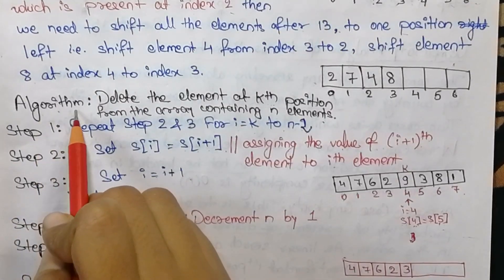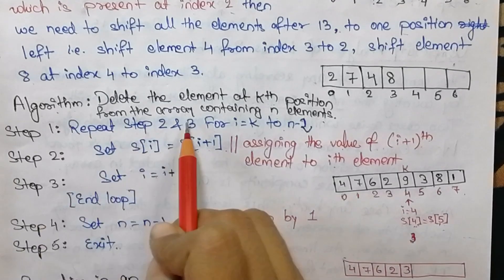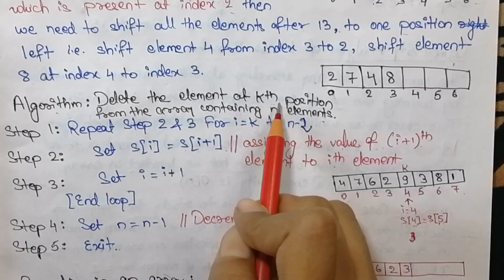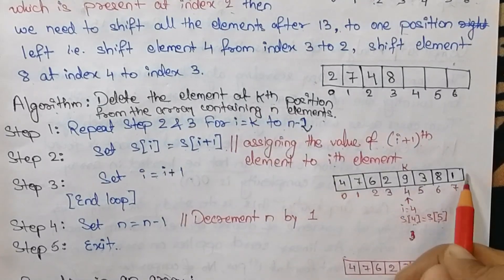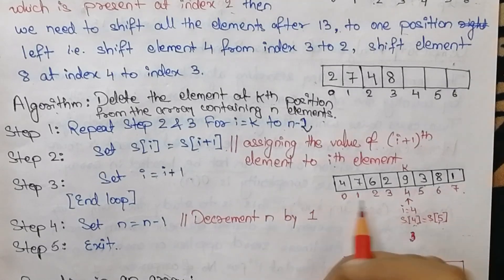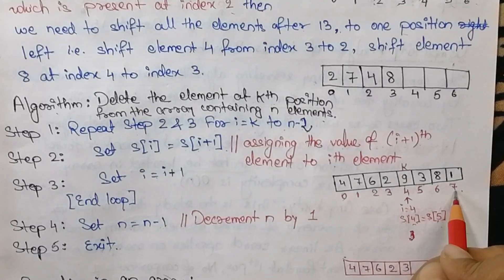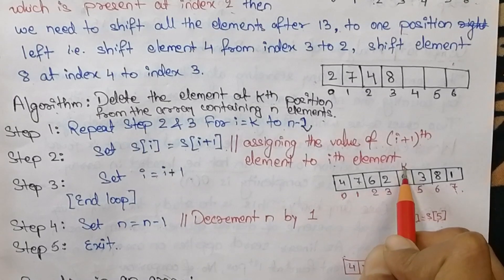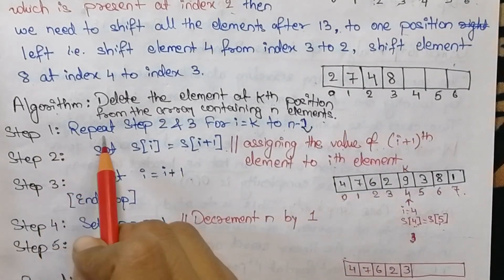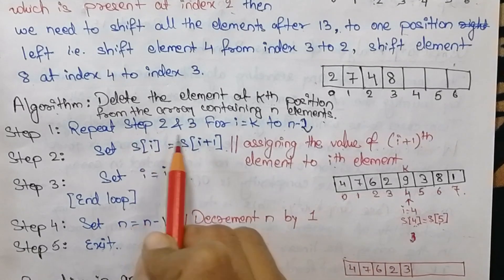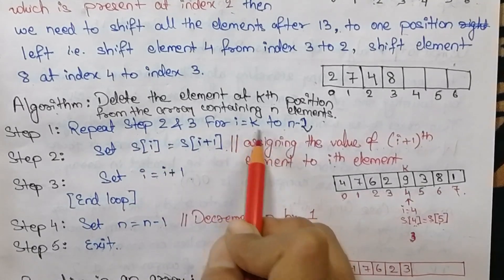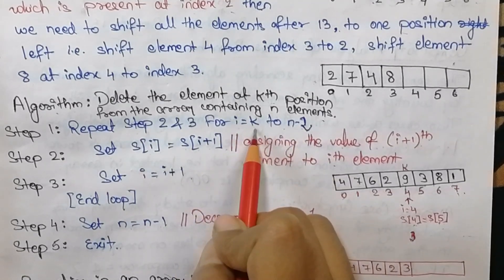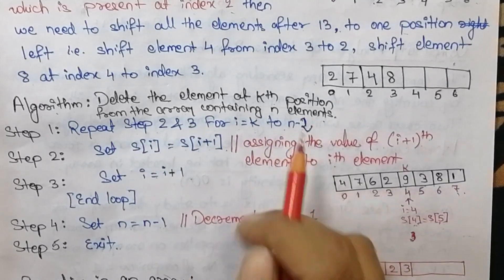Now let's understand the algorithm for deletion of an element from the array. The array contains elements and we want to delete the element at the kth position. Here n equals 8, from index 0 to index 7, and we want to delete element 9 which is at index 4, so k equals 4. Step 1 is the loop; steps 2 and 3 run for i equals k to n-2 — from the deletion index to the second last element.